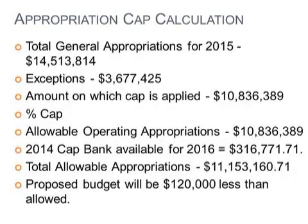The state has two different cap limitations that we deal with. One is the cap on the appropriation — on how much money you're allowed to spend. The other is the levy cap, which is a cap on how much money you're allowed to tax. We won't get to that tonight; we'll talk about that probably at the next meeting. The cost of living as certified by the state for 2015 was zero, so the built-in cap that we're dealing with is zero. The allowable operating appropriations — the inside-the-cap portion — is the same number as last year: $10,836,389.